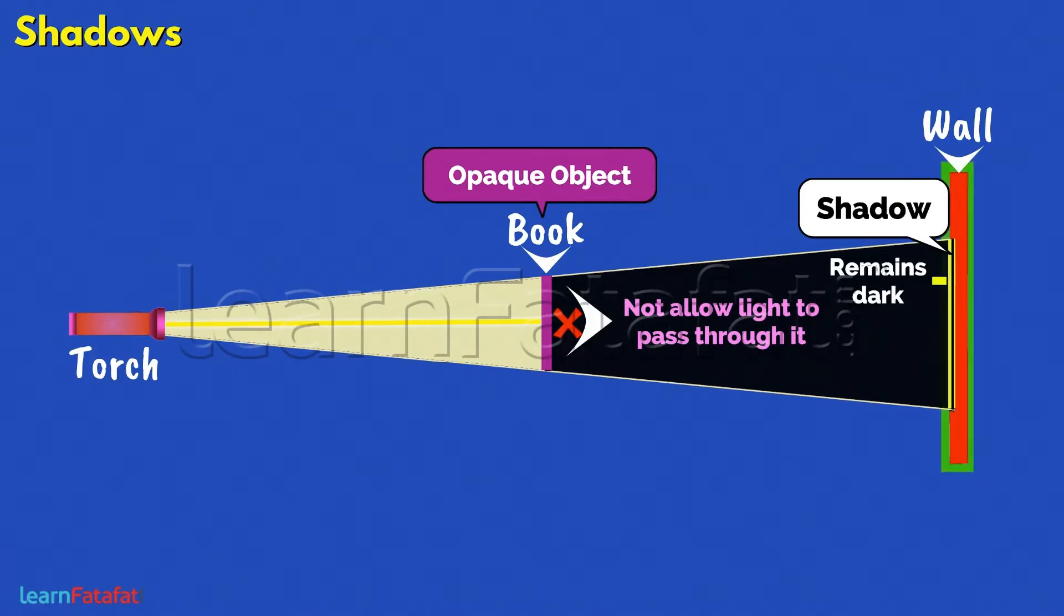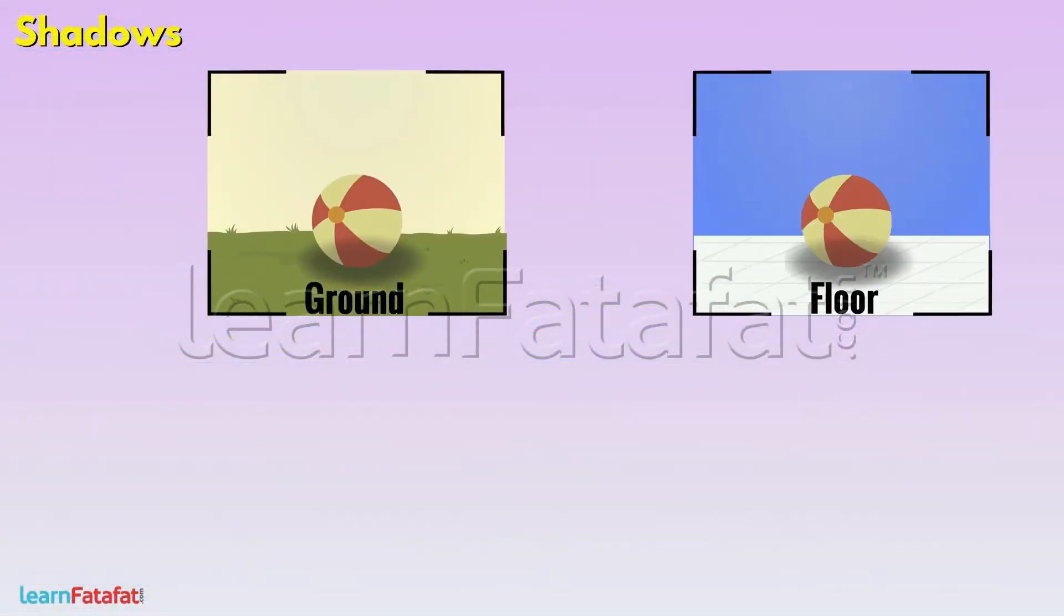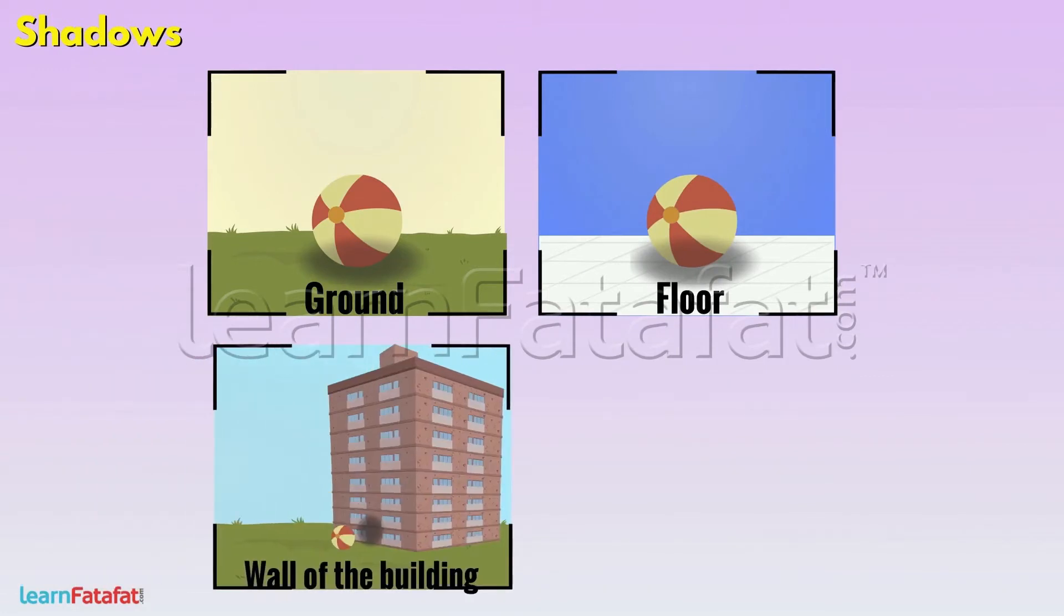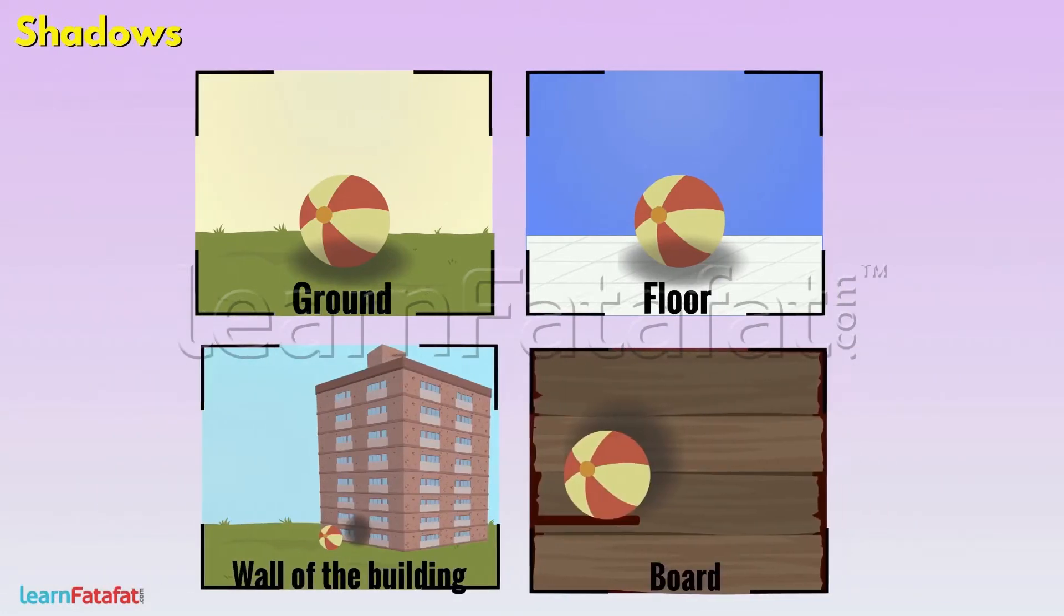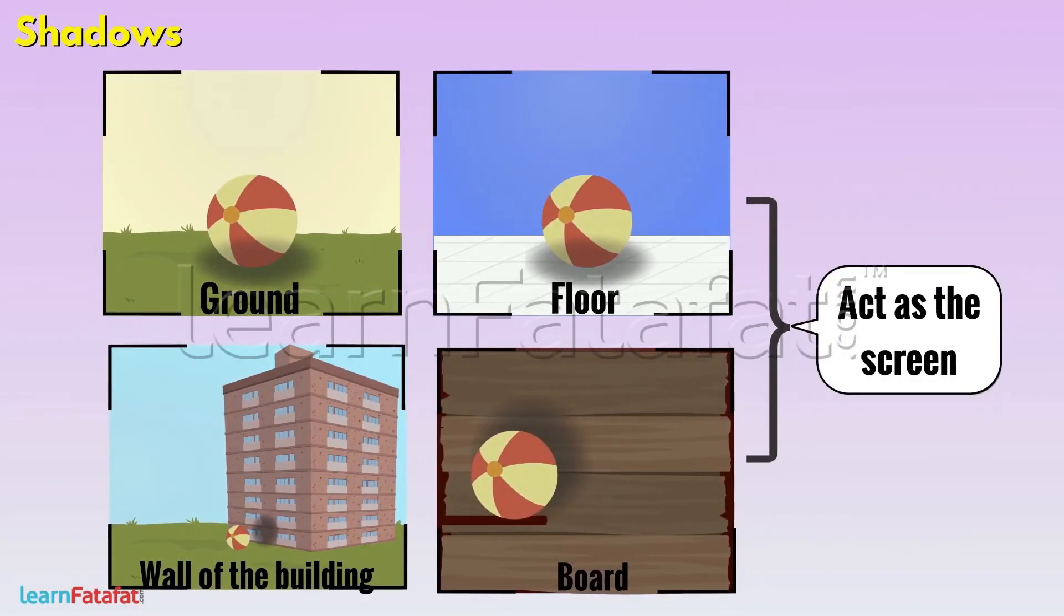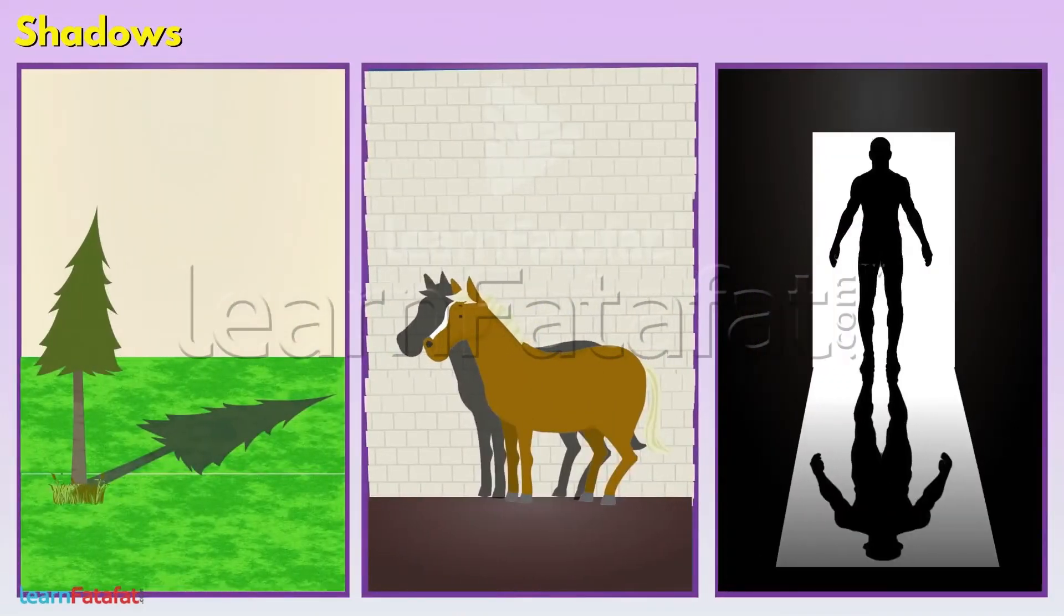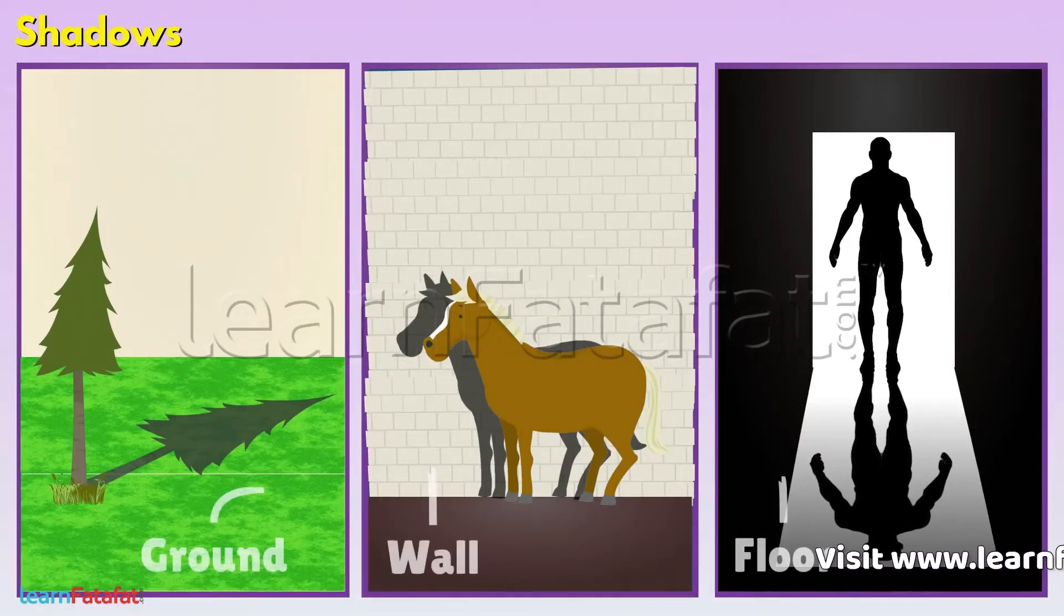The objects on which the shadow is formed is called as the screen. Ground, floor, walls of building, board and similar things act as the screen. Here are some different examples showing shadows of tree, animals and man on different screens.